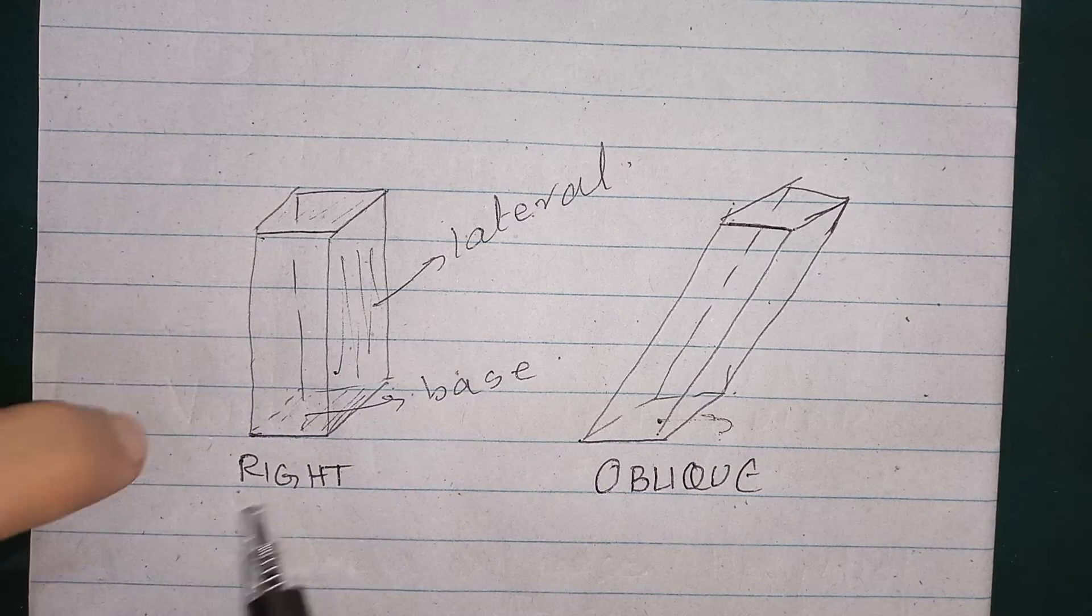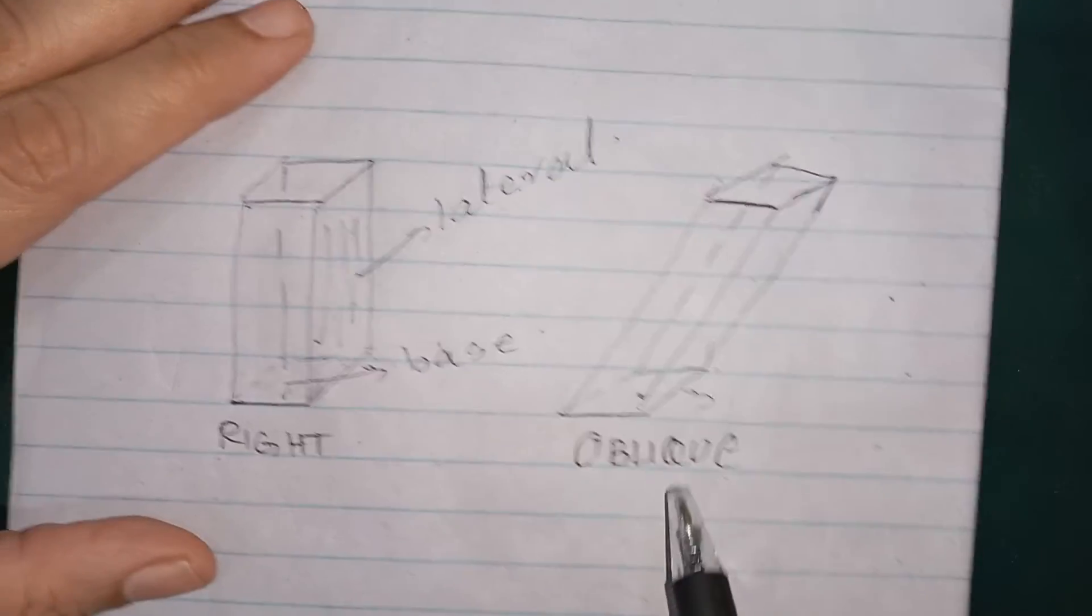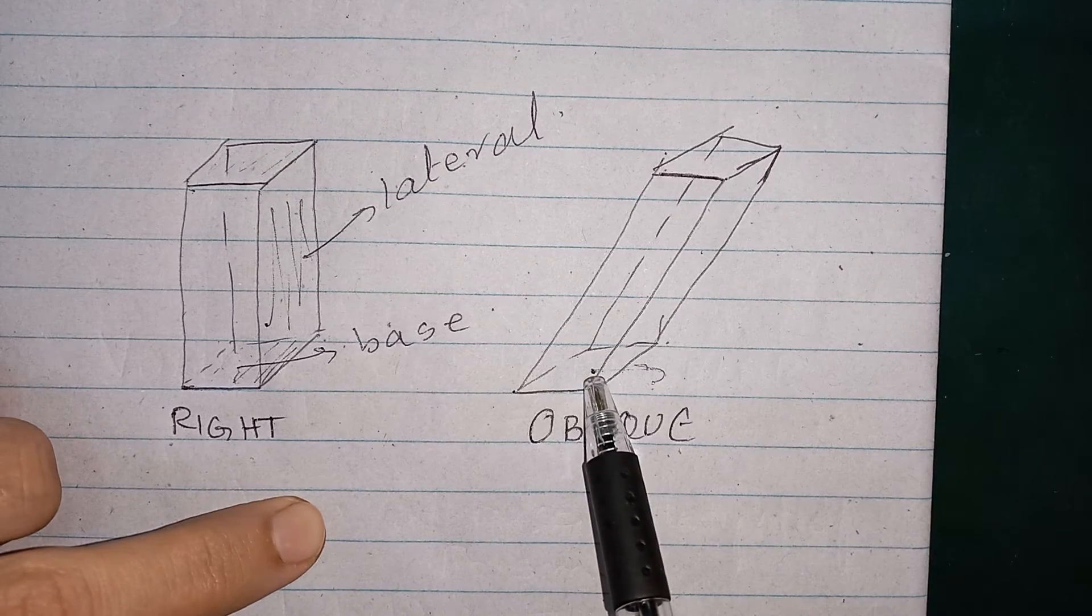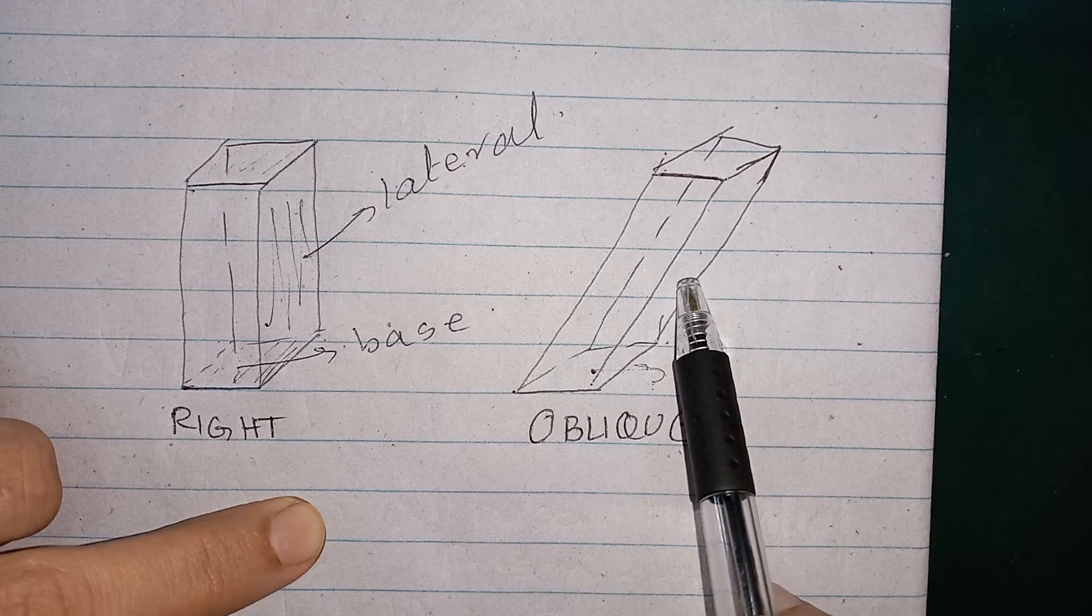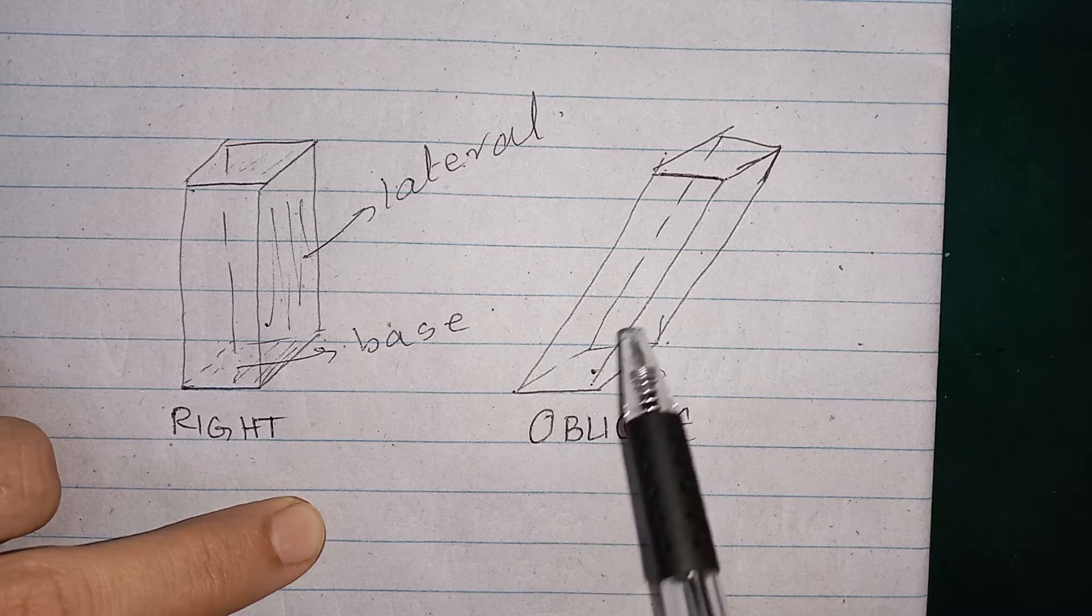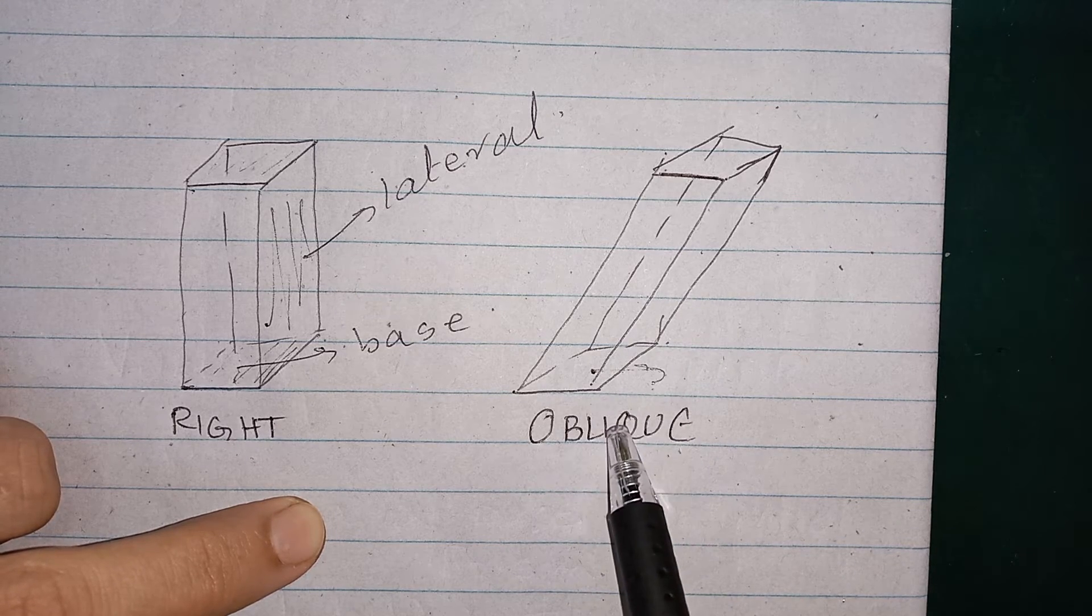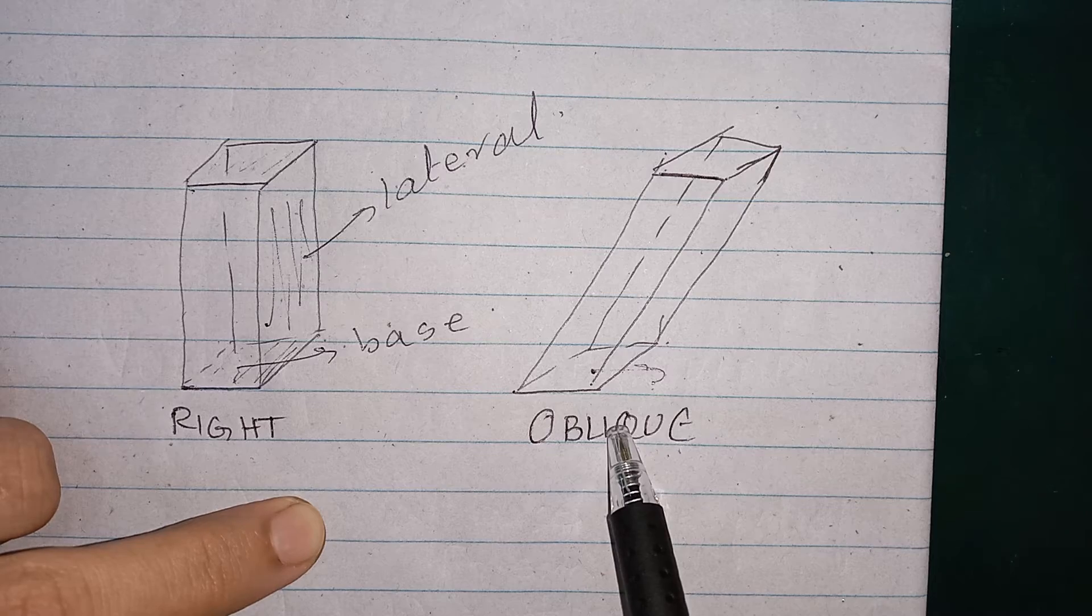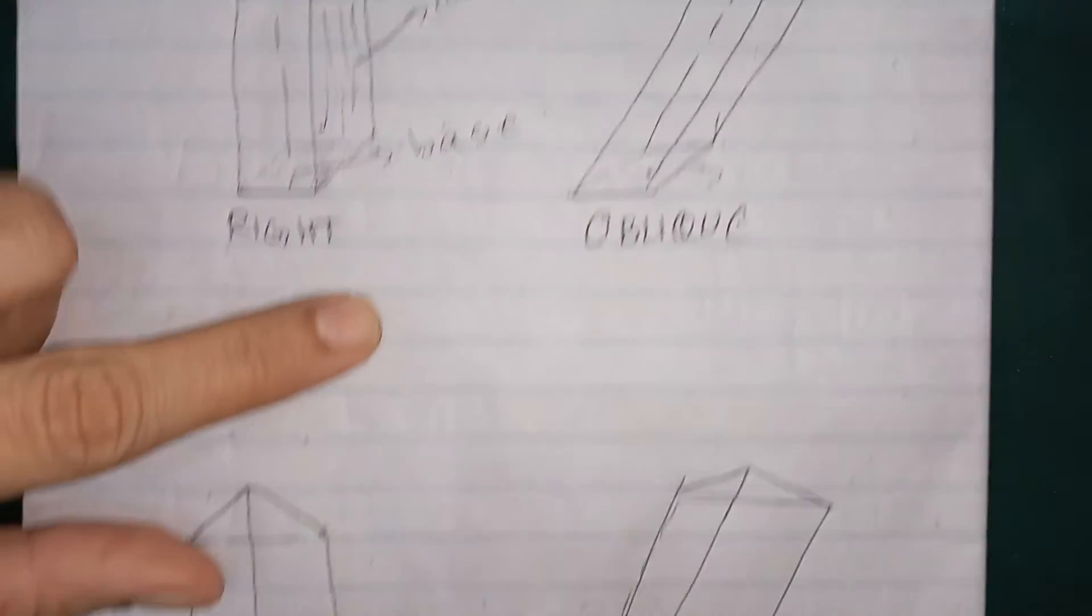So we call this shape as right prism whereas in this the base and the lateral faces are not at the right angle. They are different. So we call this shape as an oblique prism or oblique shape.